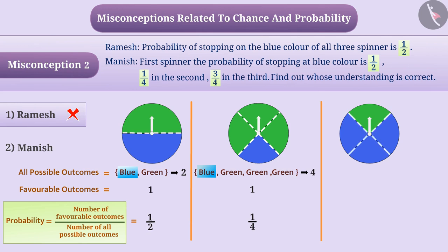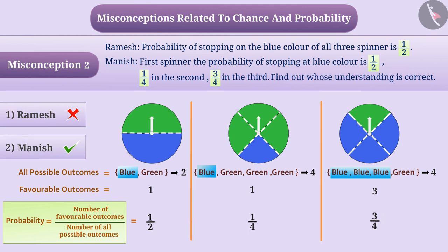On doing 4 equal parts of the third spinner, there is 1 green part and 3 blue parts. The number of possible outcomes is 4, and the condition of getting blue color is 3. Therefore, the number of favorable outcomes is 3, and the probability of getting blue color is 3 by 4. In this way, the probability of getting blue color in the first spinner is 1 by 2, in the second spinner is 1 by 4, and in the third spinner is 3 by 4. That is, option 2 is the correct answer.